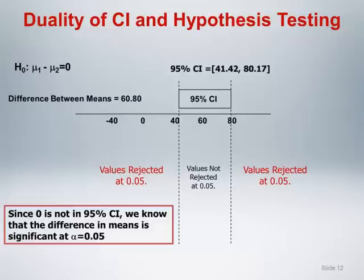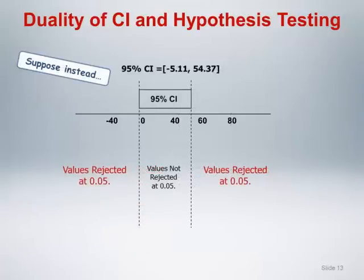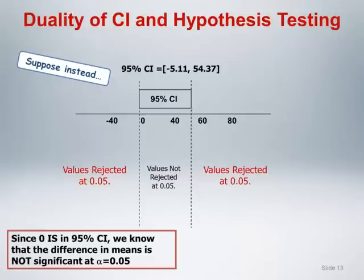Now, suppose that instead of this confidence interval, we had obtained a 95% confidence interval extending from minus 5.11 to 54.37. Now we have a confidence interval that does contain 0, the value specified in the null hypothesis. Since 0 is in the 95% confidence interval, we know that the difference in means is not significant using a 0.05 test. Thus, simply by calculating the 95% confidence interval, we can determine the outcome of the corresponding hypothesis test. Of course, this does not provide us with the exact p-value, simply the bound below which we know it must be. The general recommendation is to report both the 95% confidence interval and the exact p-value for the corresponding test, as this provides a more comprehensive and complete statistical assessment of the difference between means.